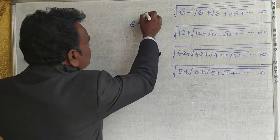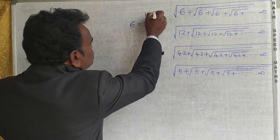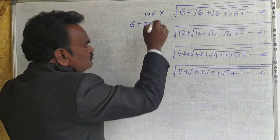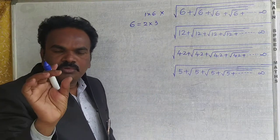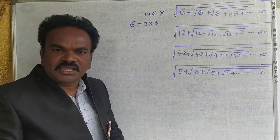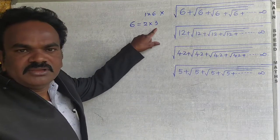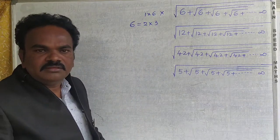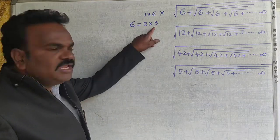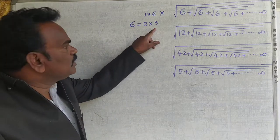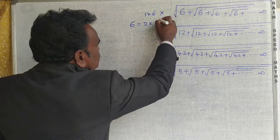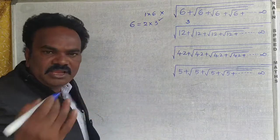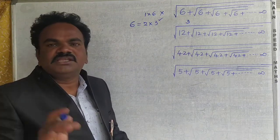One more possibility is 1 into 6, but we should not consider this, because the condition requires the product of two consecutive numbers. So, the big number is 3, and your right answer is 3. Big number is equal to 3.